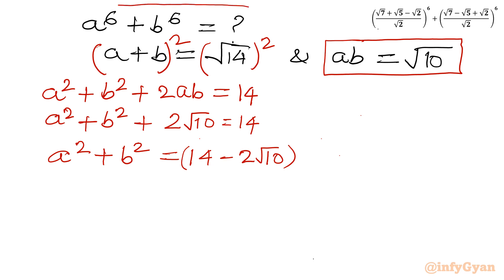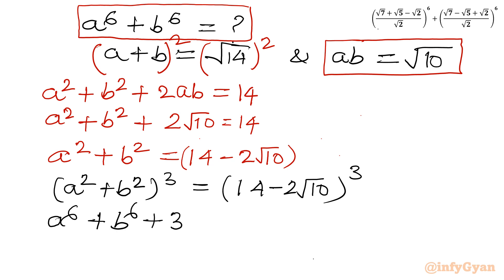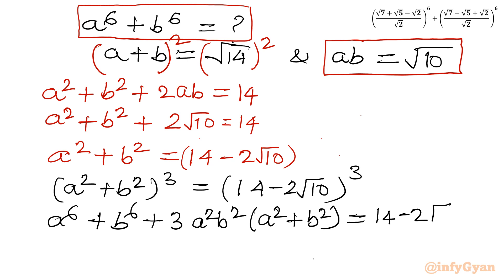Now to get a⁶ + b⁶, I will cube both sides of a² + b² = 14 - 2√10. Using the (a + b)³ formula: (a²)³ + (b²)³ + 3(a²b²)(a² + b²) = (14 - 2√10)³.